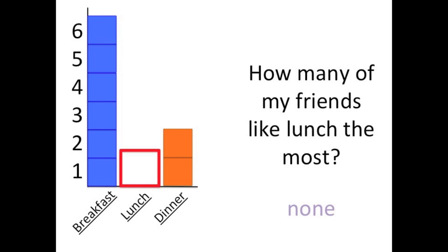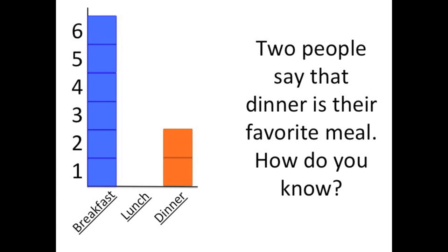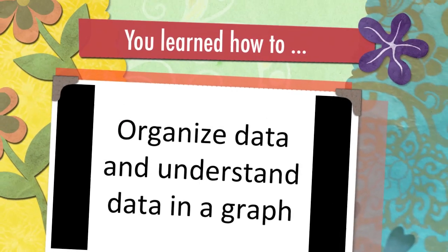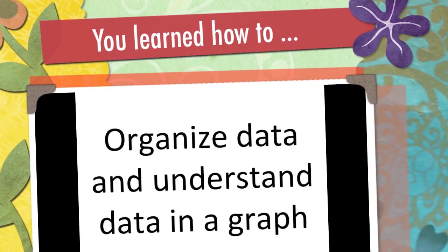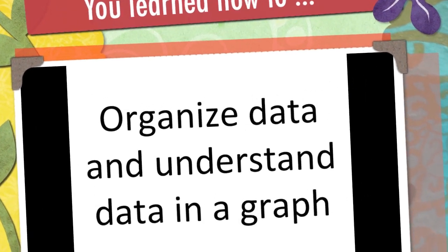Here's the last question: how can you tell from this graph that only two people say that dinner is their favorite meal? There are only two orange boxes in the dinner column. I hope you had fun with me today organizing data and understanding data in a graph!